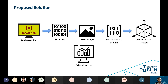After that we convert the binaries to an RGB image. RGB stands for red, green and blue, and at this stage the image is going to be at a grayscale color, so we are not going to see much of the malware at this stage. After that we slice the values into a matrix of 3D, 3-by-3 in RGB, and after slicing the values into that matrix we convert it to a 3D malware shape, which leads us to the final phase: the visualization phase.